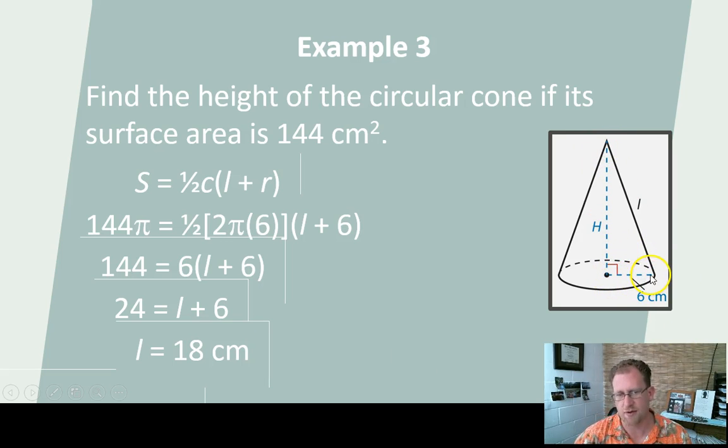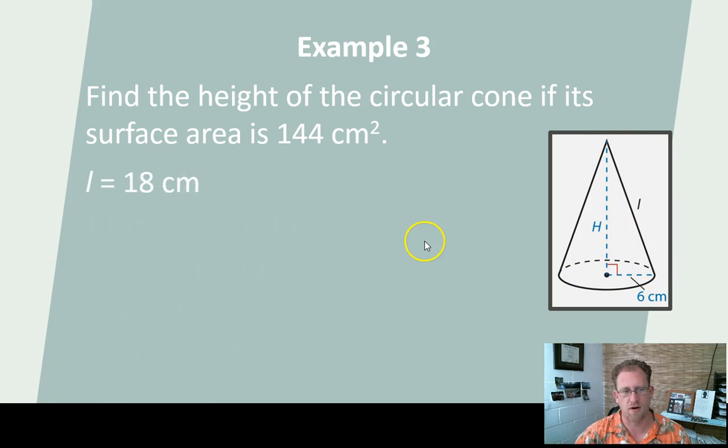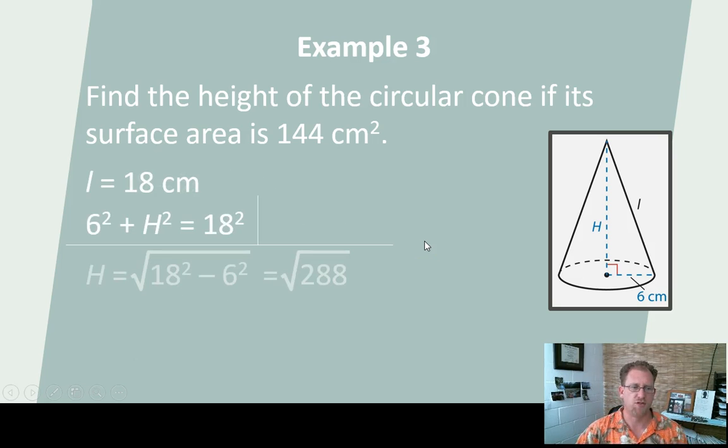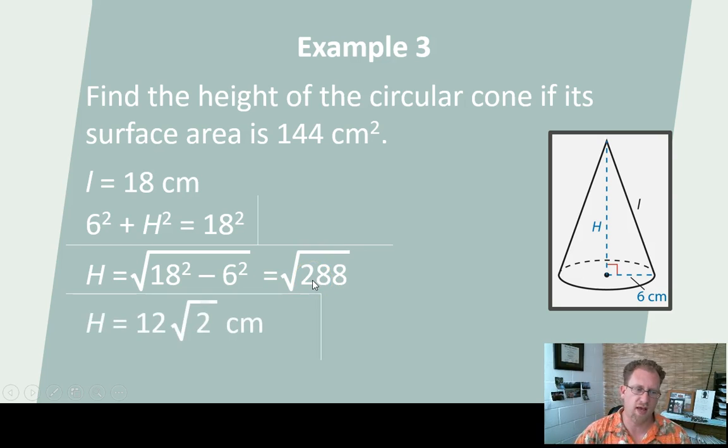My base is 6. Now we can use Pythagorean's Theorem. 6 squared plus H squared equals 18 squared. So I'm going to solve Pythagorean's Theorem for H. H equals the square root of 288, or 12 radical 2, or if you wanted to go to a decimal, that's approximately 17. So that is another way that you can use this.